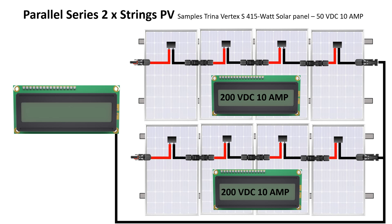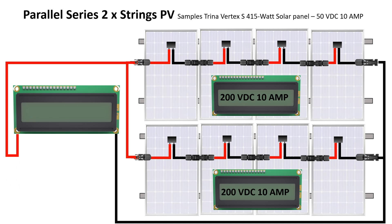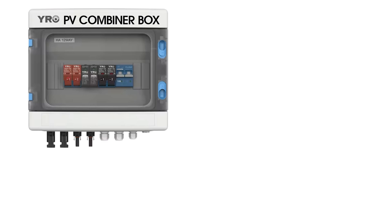To parallel the strings, you connect positive to positive and negative to negative. When you measure them in parallel, the volts stay the same at 200 volts but the amps add up, giving you 200 volts at 20 amps. That increases your power: 200 volts times 20 amps gives you an output of 4 kilowatts. The principle stays the same regardless of inverter size.